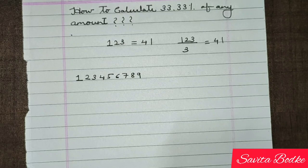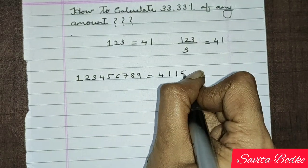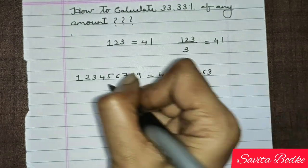So the answer of this is 411522.63, because I have just divided this by 3. It's so simple.